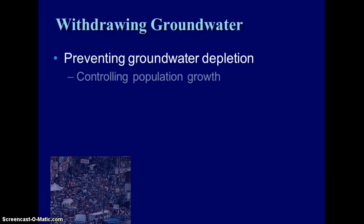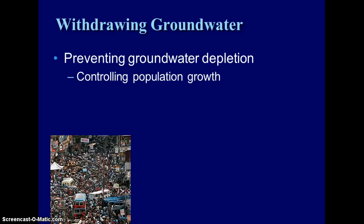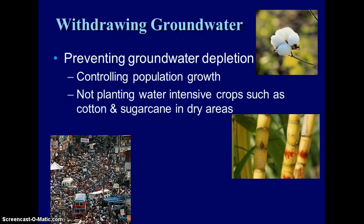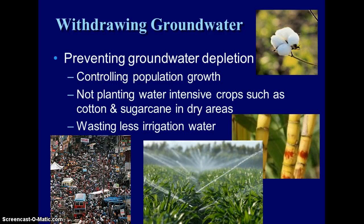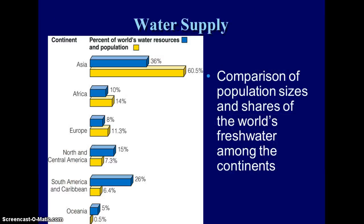So what can we do to prevent groundwater depletion? If we can control population growth, we won't have the same dependence on groundwater in the future. If we are careful about the types of crops planted in dry areas — cotton and sugar cane are two very water-intensive crops, which is why they grow well in the southeast United States where we have plenty of water — we need to avoid using those in dry areas that depend on irrigation. Coming up with ways to irrigate that use less water, such as drip irrigation right near the roots, reduces the amount of water that evaporates compared to traditional spray irrigation.